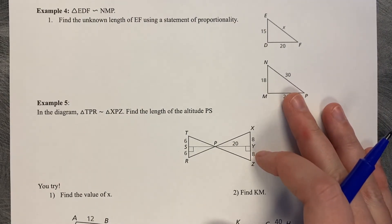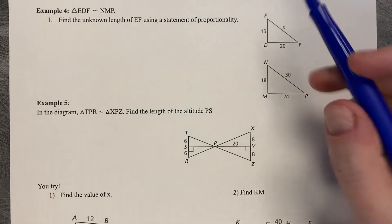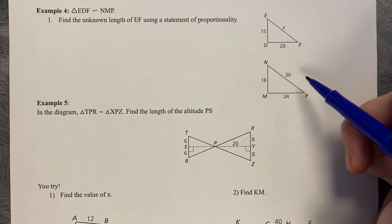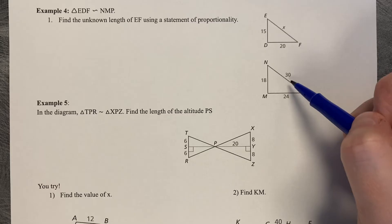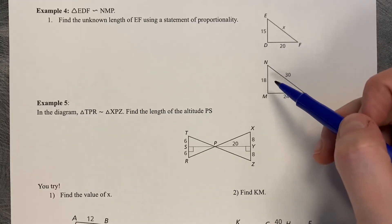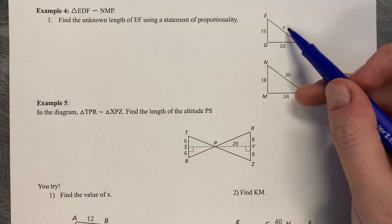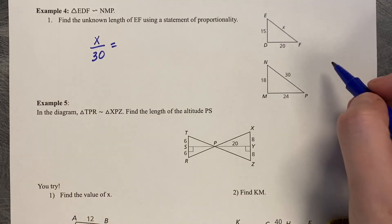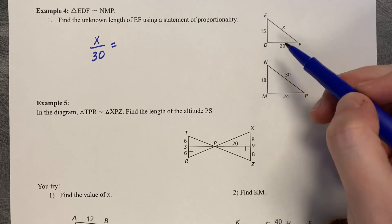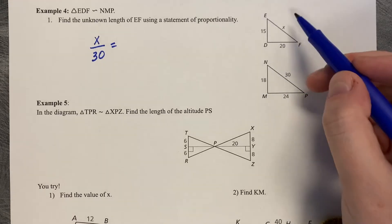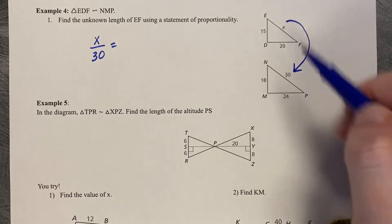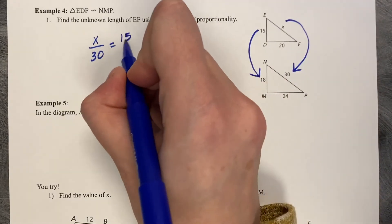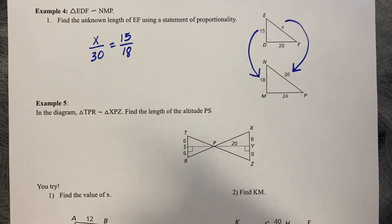These two figures are similar. Find the unknown length of EF using a statement of proportionality. So we're trying to find the length of EF, which is labeled with X. So all we need to do is compare it to its corresponding side and then use two other corresponding sides to set up a proportion. You don't need to do all three, you can just set up two at a time. So I like to start with my unknown. X corresponds to 30. And now you just pick two other sides that are friendly. We could say 15 is to 18 or 20 is to 24. But you have to go the same direction. So if I go from X to 30, then I have to go from 15 to 18. They have to be divided in the same direction, otherwise the proportions don't work.